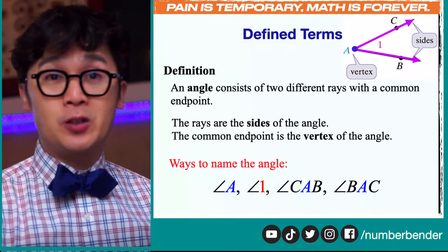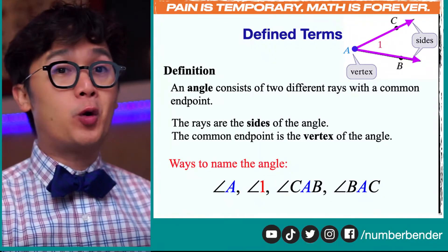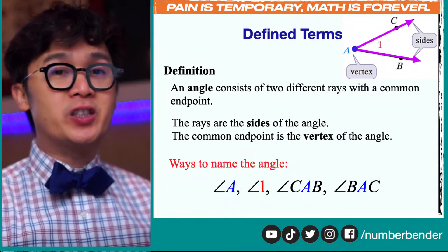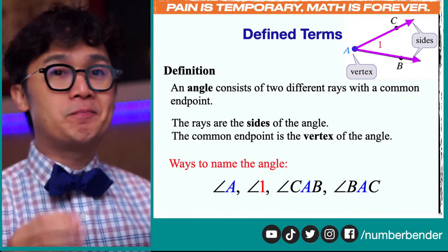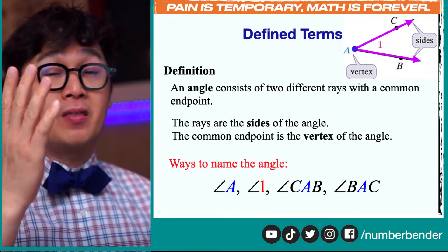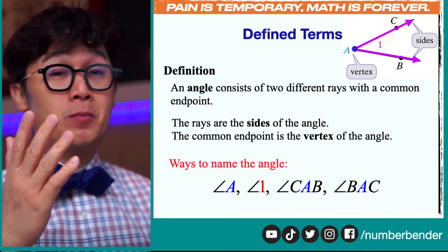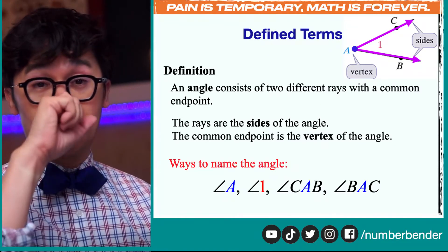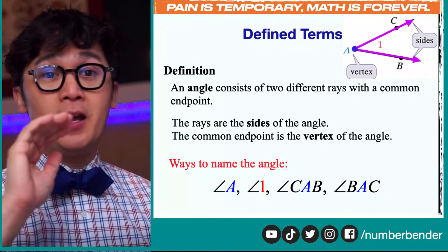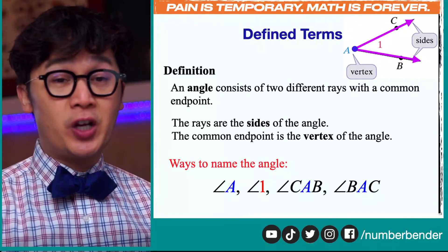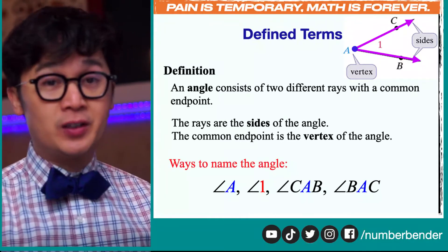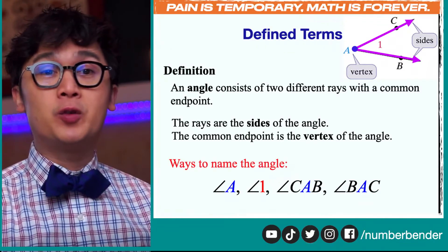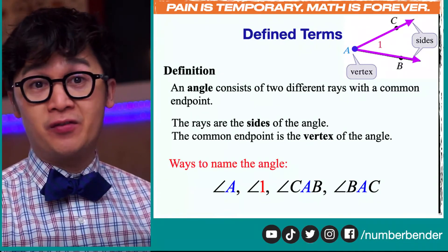Again, in mathematics, notations are important — just like the symbols we use in the order of operations — because with slight changes and differences, it would mean something different.